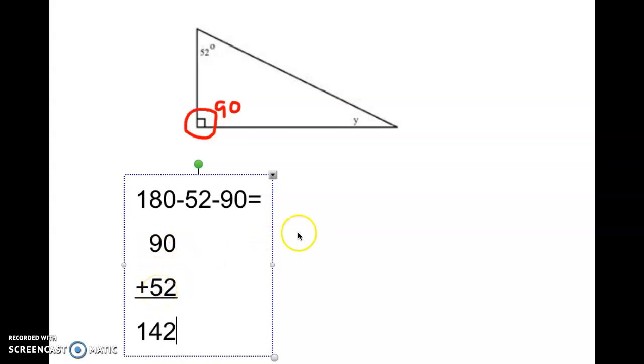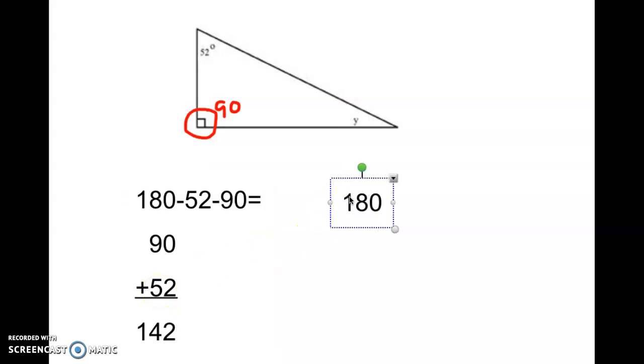Now we do 180 minus 142, and to do that we solve and we have to borrow to solve our problem. 10 minus 2 is 8, 7 minus 4 is 3, so our missing angle y equals 38.